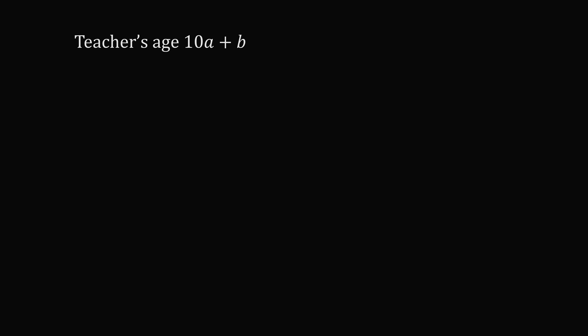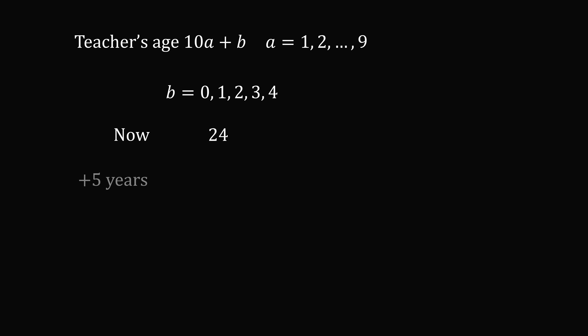So the math teacher's age is a two-digit number, which we'll represent as 10a plus b. a is a digit going from 1 to 9 and b will be a digit going from 0 to 9. But there are two cases to consider. First, suppose that b is a digit from 0 to 4. So suppose the teacher's age right now is 24.